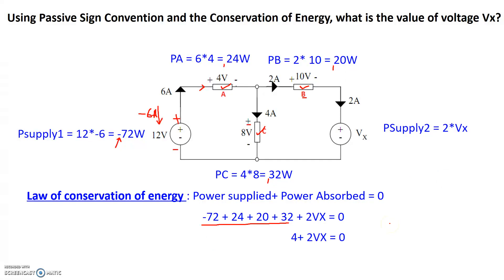And by rearranging, we get Vx to be negative 2 volts. So that's the value of this voltage source.